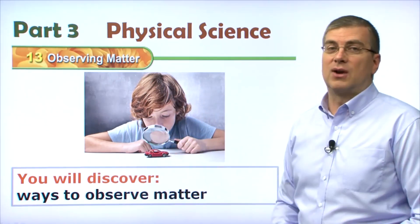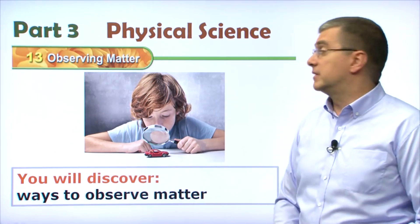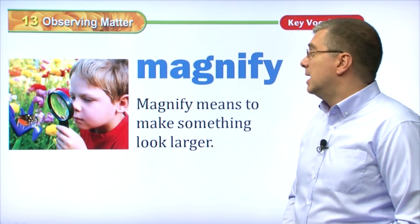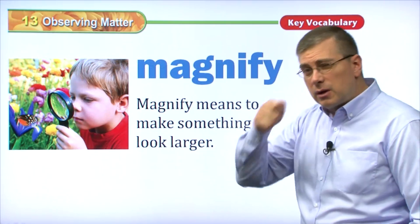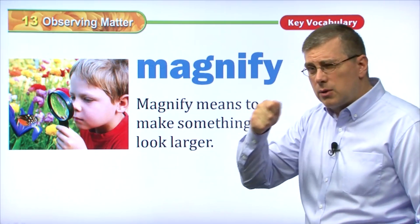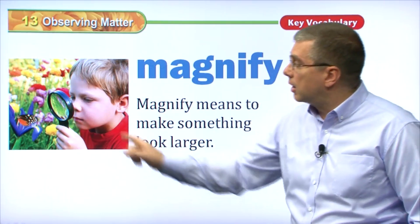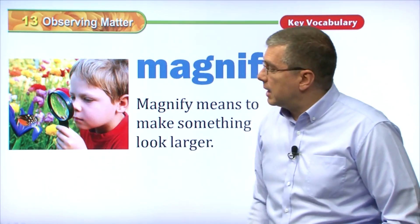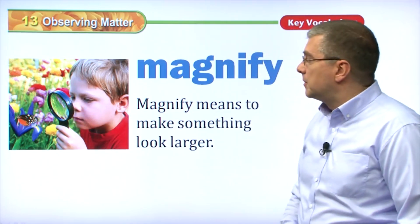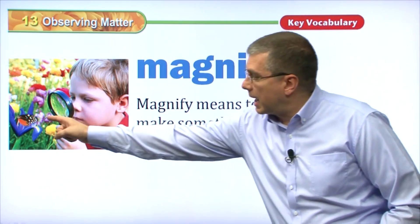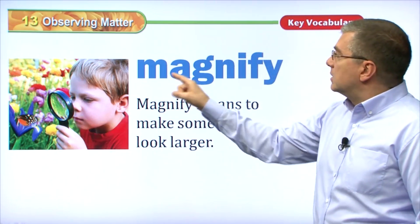Let's take a look at some of the different ways to observe something in front of you. The first way is the one we've already looked at — we saw the boy looking through the magnifying glass at a car. This boy here is using a magnifying glass again to look at a butterfly. Magnify.